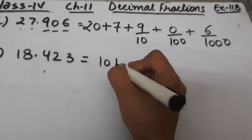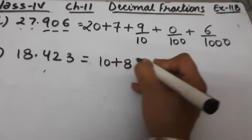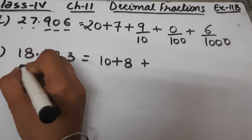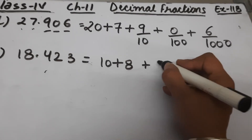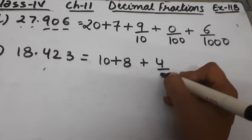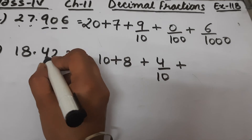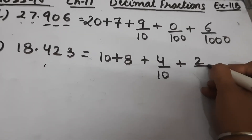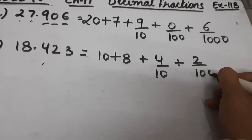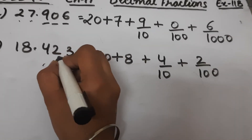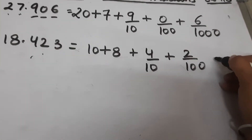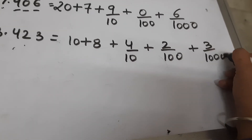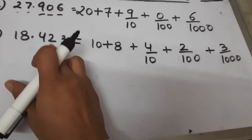Part e is 18.423. So this will be 10 plus 8, which is 18, plus 4 by 10 since 4 is at the tenths position, then 2 by 100 because 2 is at the hundredths position, and 3 by 1000 because 3 is at the thousandths position.